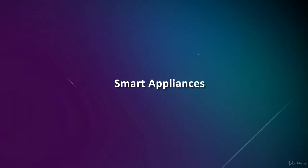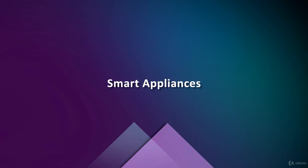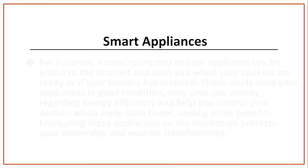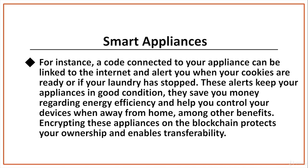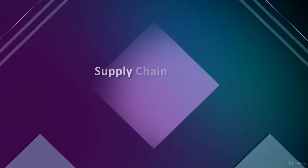These are some examples of blockchain Internet of Things. Smart appliances: a smart appliance is a device that connects to the Internet and gives you more information and control than before. For instance, a sensor connected to your appliance can be linked to the Internet and alert you when your cookies are ready or if your laundry has stopped. These alerts keep your appliances in good condition, save you money regarding energy efficiency, and help you control your devices when away from home. Encrypting these appliances on the blockchain protects your ownership and enables transferability.